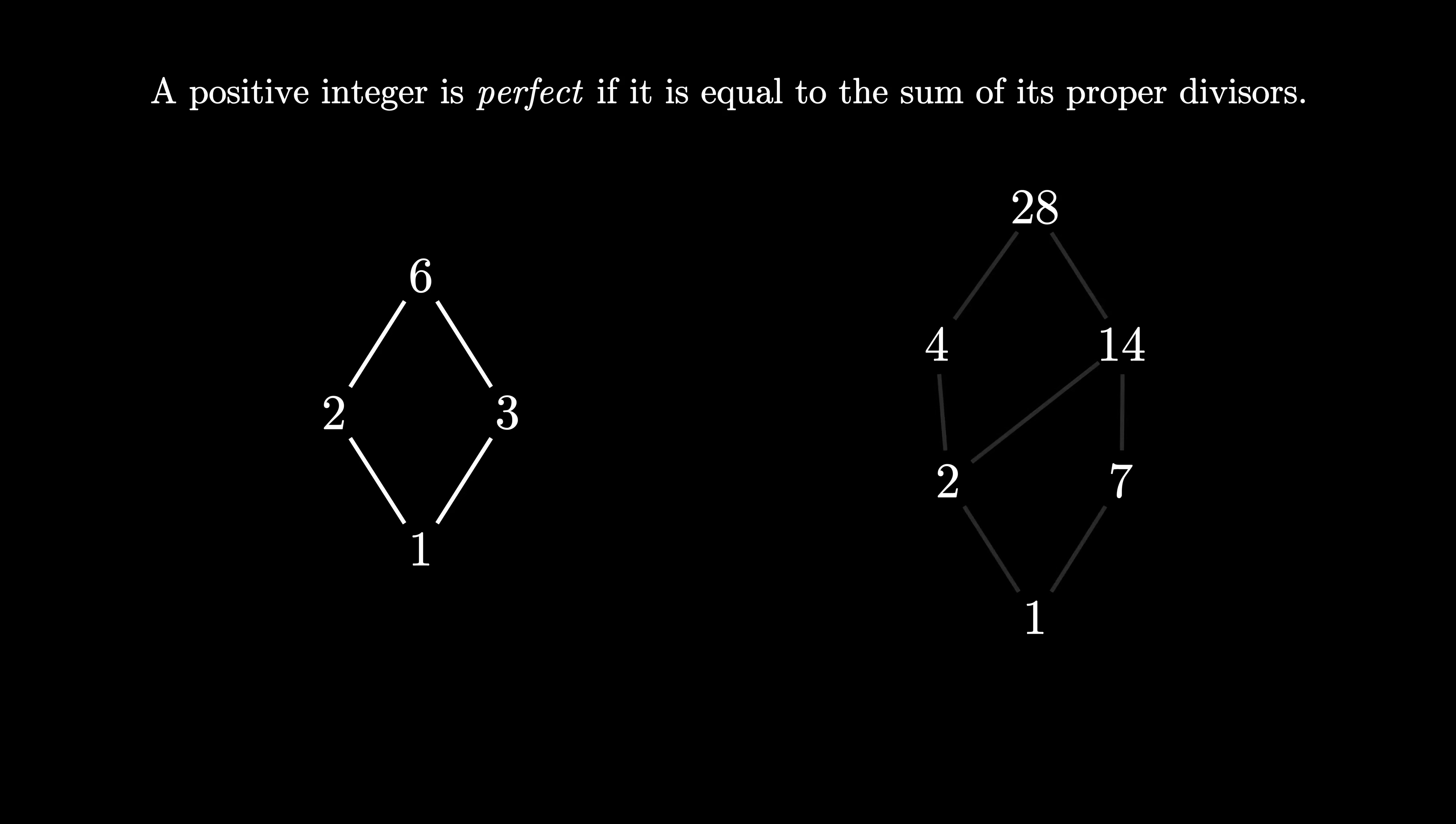And here's the number 28 with its proper divisors 4, 14, 2, 7, and 1. We can see that 6 is equal to 1 plus 2 plus 3, and 28 is equal to 1 plus 2 plus 4 plus 7 plus 14.